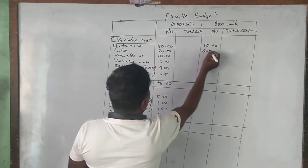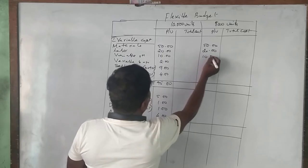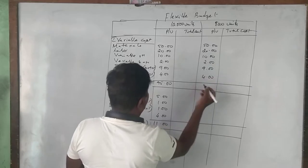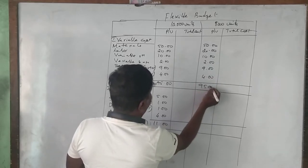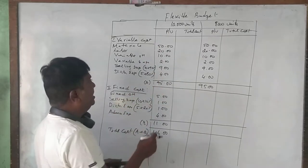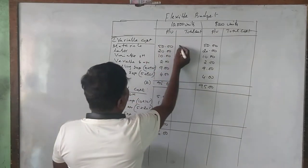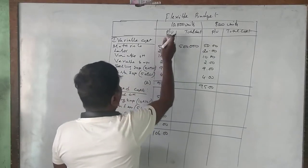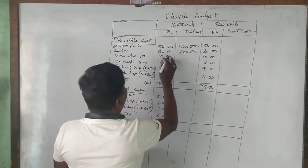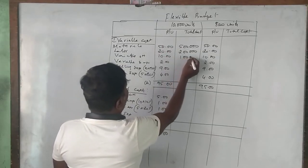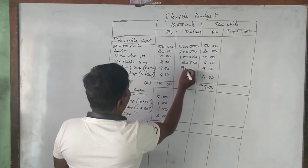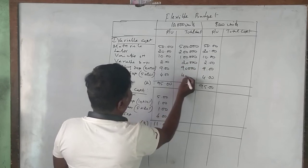Labor 20 rupees, variable overhead 10 rupees, variable selling 2 rupees, distribution variable 9 rupees, admin variable 4 rupees — total 95 rupees per unit. Multiplying: 50 × 10,000 = 5 lakhs, 20 × 10,000 = 2 lakhs, 10 × 10,000 = 1 lakh, 2 × 10,000 = 20,000, 9 × 10,000 = 90,000, 4 × 10,000 = 40,000. Total variable cost = 9,50,000.